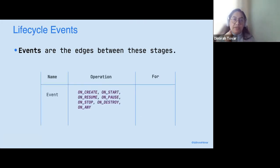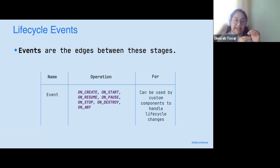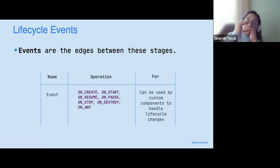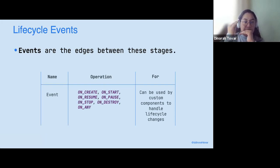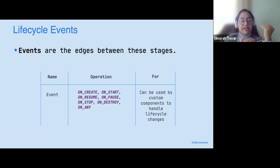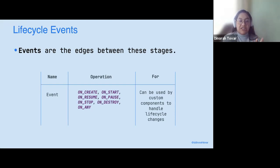Events have operations that give you the chance to understand which is the next stage of your lifecycle. If you are on resume, you have two options: you can go on pause, or you can go to on stop. That's the lifecycle of your activity. And the events at the end of the day are functions — they are not an enum like the states.